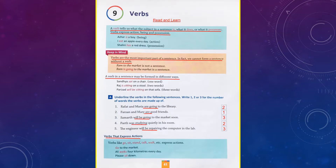This is Chapter 9, Verbs, and we are all on page number 41. As you can see on the picture, I have underlined certain sentences and I have also written on top 'read and learn', which means you need to read and learn whatever is there in your book. The first sentence I have underlined is the definition of the word verb. A verb tells us what the subject in a sentence is, what it does or what it possesses. Verbs express action, being and possession.